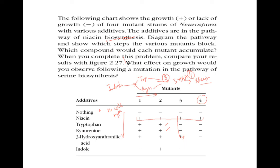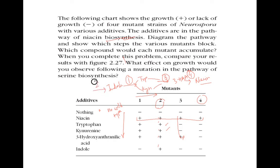Mutant number 1: if you provide either tryptophan or kynurenine it will grow, and 3-hydroxyanthranilic acid and niacin also support growth. So this mutation is somewhere between indole and tryptophan/kynurenine. For mutant number 2: it grows with niacin, tryptophan, kynurenine, 3-hydroxyanthranilic acid, and even indole. So the mutation is actually before indole.